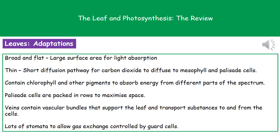The palisade cells are packed very neatly in rows in order to maximize the space. There are also veins that run throughout the leaf, as seen in the first diagram, which contain structures called vascular bundles. These have two purposes: first, to support the leaf, and second, to transport substances to and from the different cells.